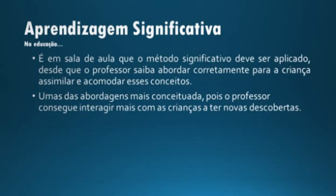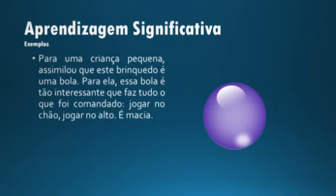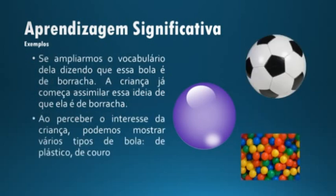É em sala de aula que o método significativo deve ser aplicado, desde que o professor saiba abordar corretamente para a criança assimilar e acomodar esses conceitos. Para uma criança pequena que assimilou que este brinquedo é uma bola, essa bola é tão interessante que faz tudo o que foi comandado — jogar no chão, jogar no alto, ela é macia. Se ampliarmos o vocabulário dizendo que essa bola é de borracha, a criança já começa a assimilar essa ideia.